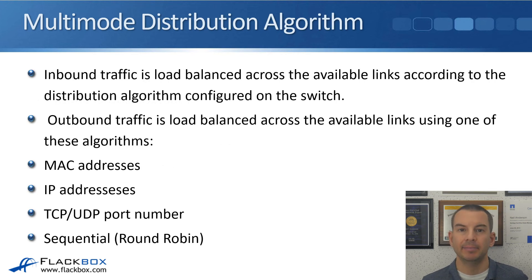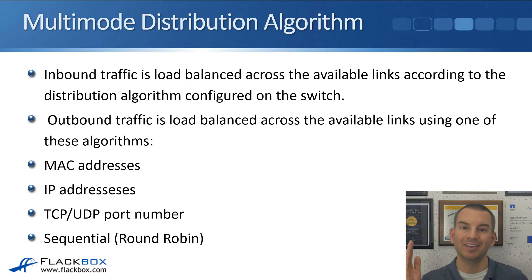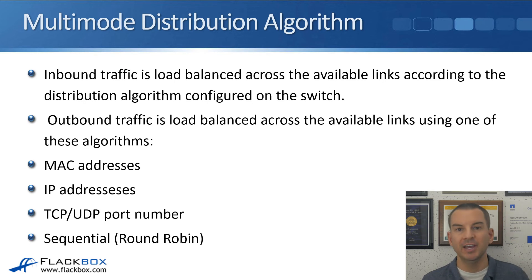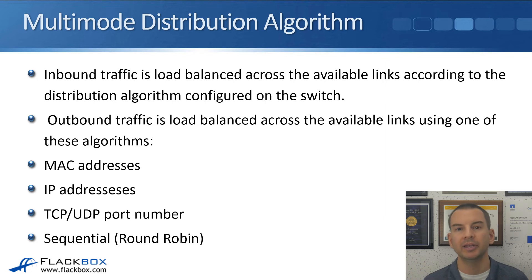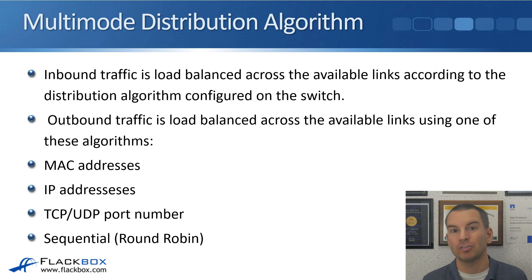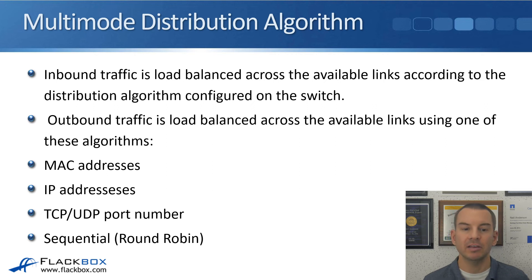With a configured multi-mode interface group, ONTAP load balances traffic going out across the multiple physical links. Intuitively you might think packets go out round-robin — first packet on link one, second on link two, and so on. That sequential type is supported, but it's not best practice because packets can take different paths with slightly different latency, potentially arriving out of order, which can cause problems with some applications.